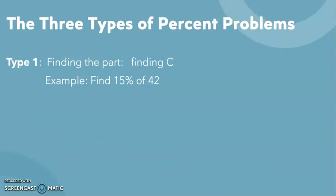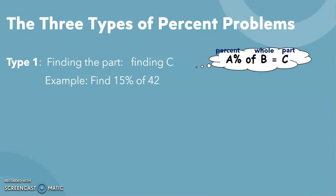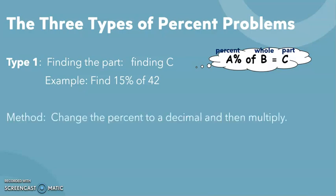Finding C, find 15% of 42. We're doing A% of B. The percent of the whole is equal to the part. Type 1, what you're going to have to remember is you're going to change the percent to a decimal and then multiply.